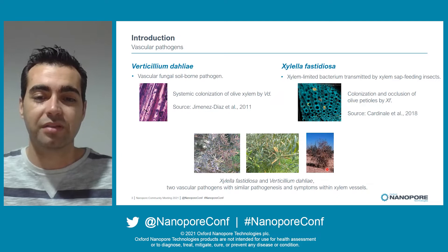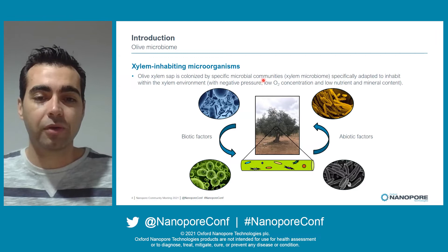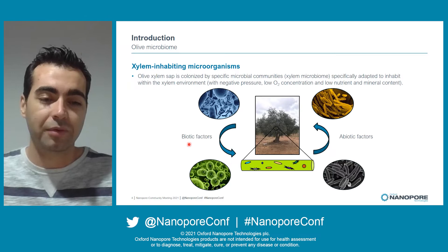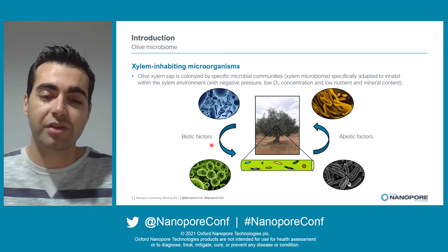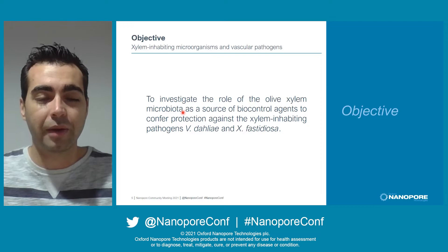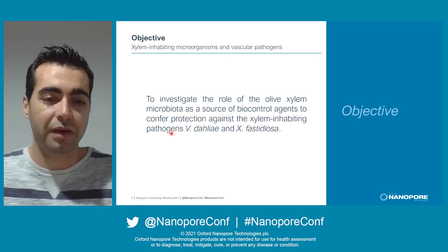This xylem sap is colonized by a series of microbial communities that live there without causing harm, and these microbial communities interact with each other and with abiotic and biotic factors, in order to produce a series of key responses that impact on plant health and plant growth. So the objective of this work is to investigate the role of the olive xylem microbiota as a source of biocontrol agents to confer protection against the xylem-inhabiting pathogens Verticillium dahliae and Xylella fastidiosa.